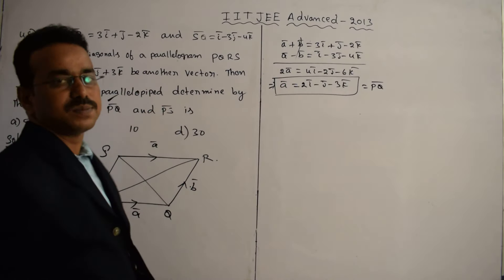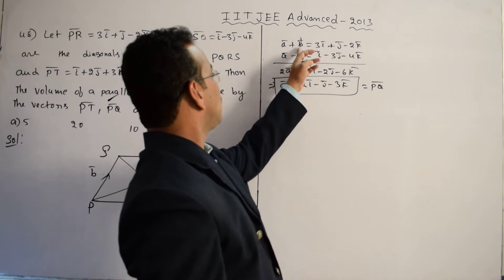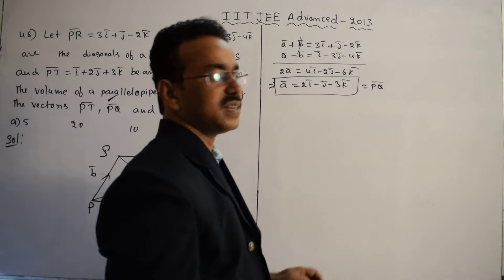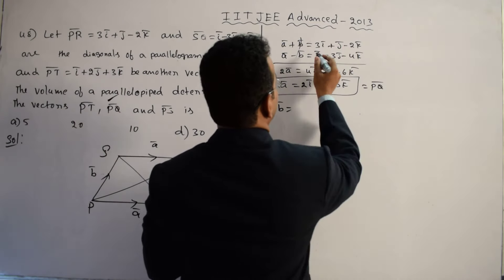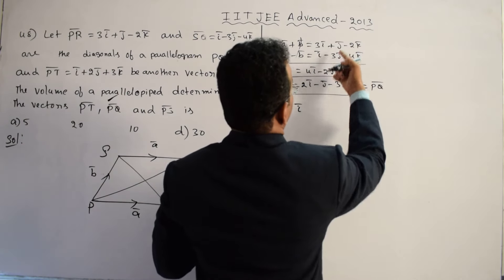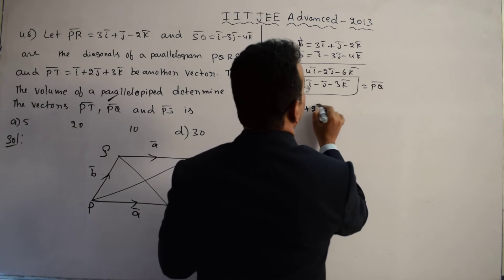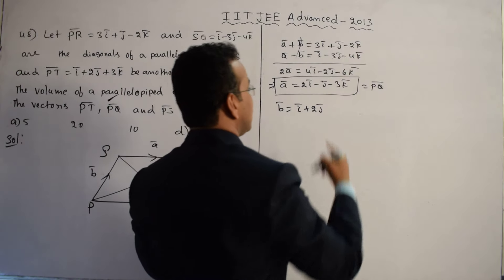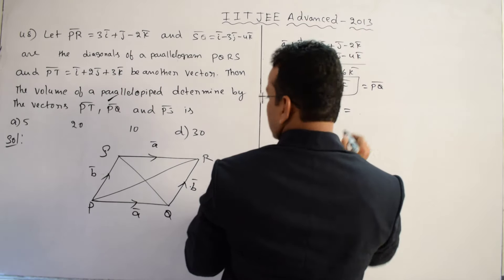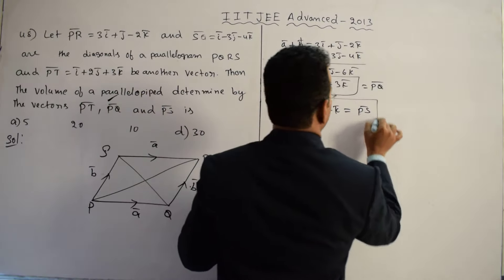Next we calculate PS̄ = B̄. We get B̄ = PR̄ - Ā, i.e., (3Ī + J̄ - 2K̄) - (2Ī - J̄ - 3K̄). Computing: 3Ī - 2Ī = Ī, J̄ - (-J̄) = 2J̄, and -2K̄ - (-3K̄) = K̄. So PS̄ = B̄ = Ī + 2J̄ + K̄.